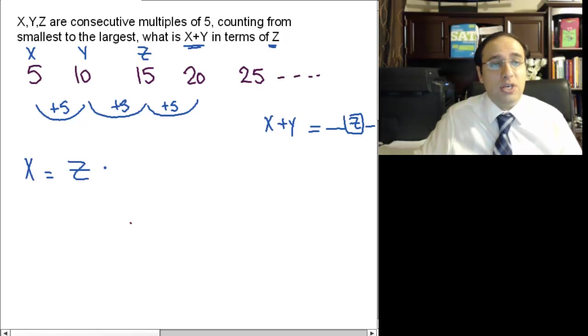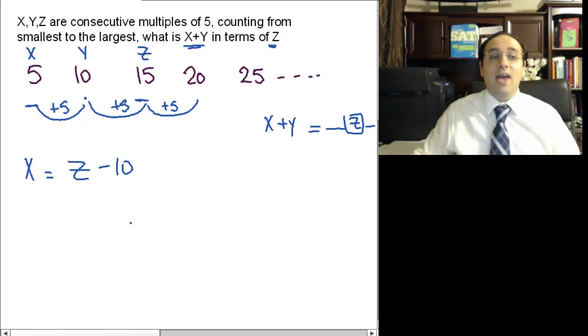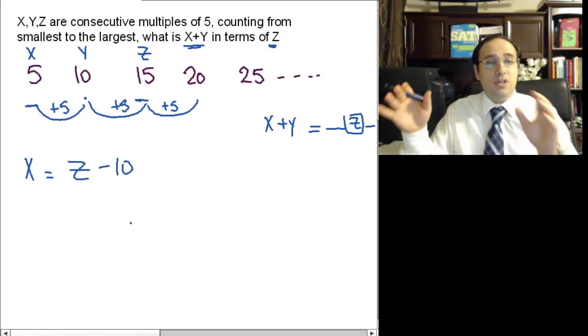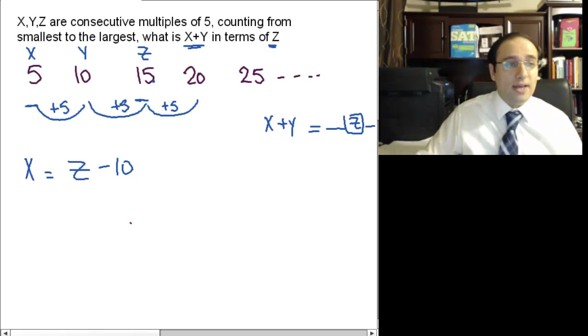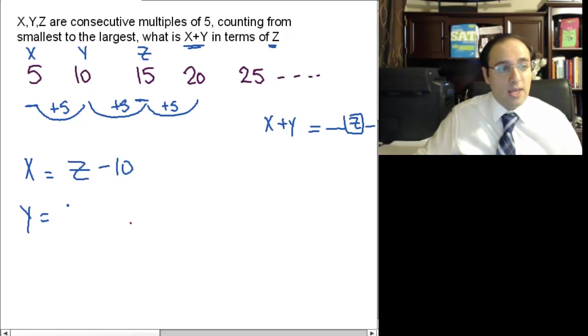X equals Z what? 5 equals 15 what? Minus 10. The difference between the 5 and the 15 is 10. If you take any three consecutive numbers, the difference is always going to be 10. So X equals Z minus 10. Similarly, Y equals Z minus 5. This is the difference between Y and Z, just 5.